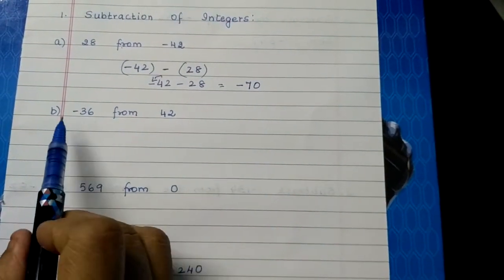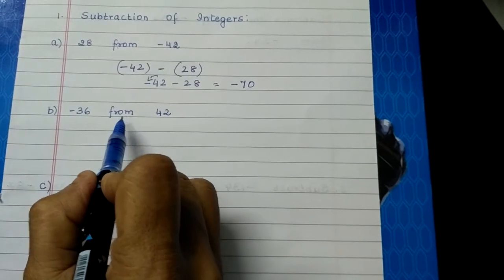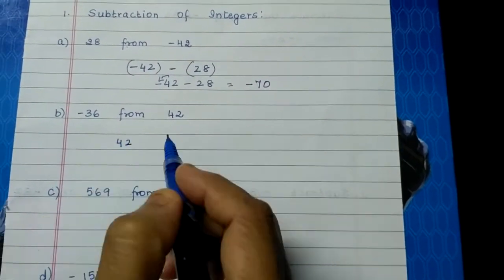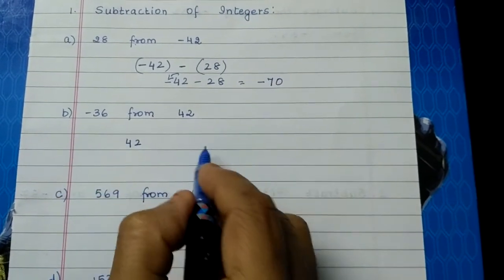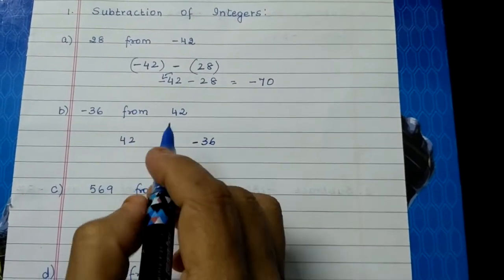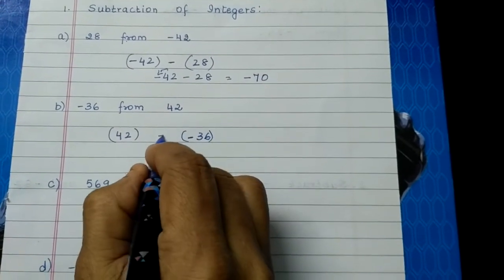Next problem, subtract minus 36 from 42. So what is the number which is coming after from? 42. So let 42 be here and this minus 36 will be here. And now what do we have to do? We have to subtract. So we will put a minus sign in between them.